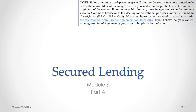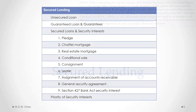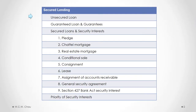Hi, it's Waylon Chow. This is Secured Lending, Module 6, Part A. In this part, we will explain what an unsecured loan is and what are the issues arising from making an unsecured loan. We will also look at guaranteed loans and guarantees, and also various issues arising from guarantees.